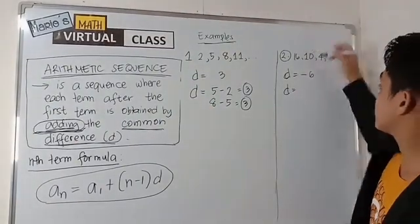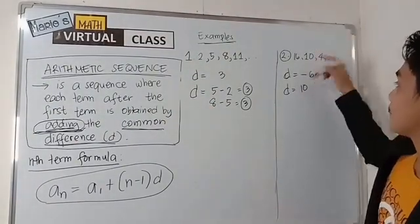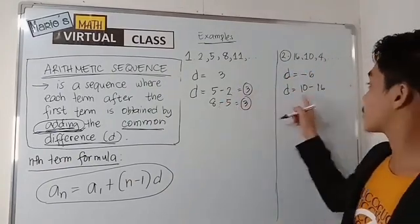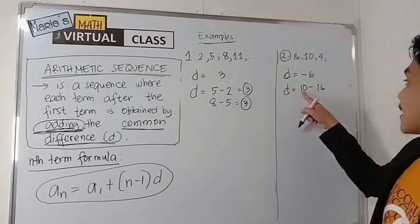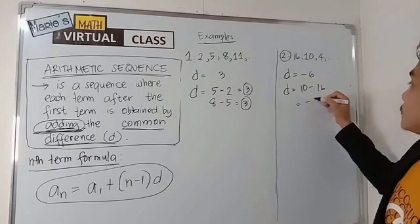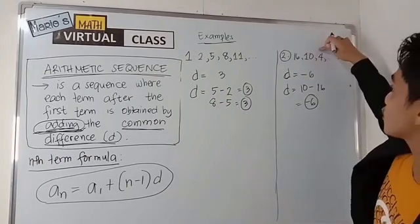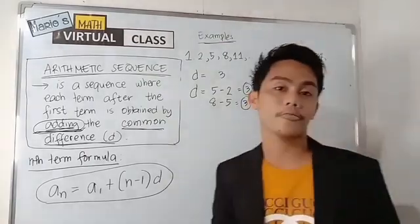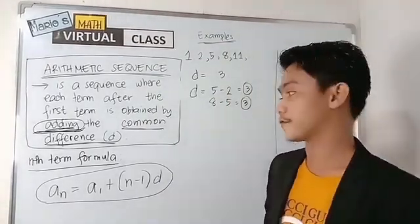By having the second term, 10, minus the first term, 16. So, it is always subtraction. 10 minus 16, 10 minus 16 would be negative 6. The same with 4 minus 10, negative 6. So, that's it. That's how to determine the common difference.